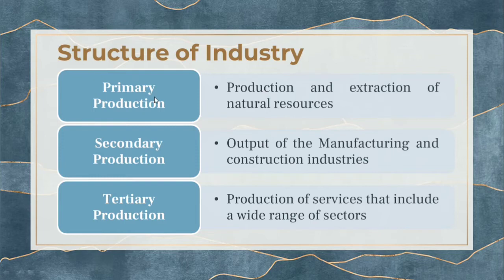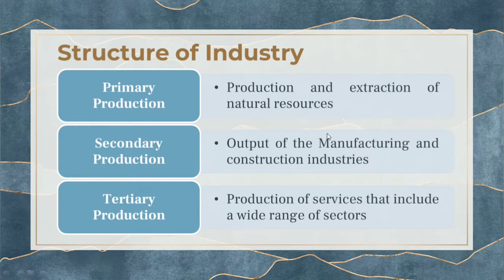There are three types of production: primary production — the production and extraction of natural resources; secondary production — the output of manufacturing and construction; and tertiary production — where services are typically found.